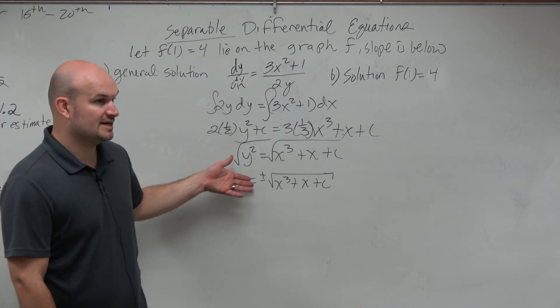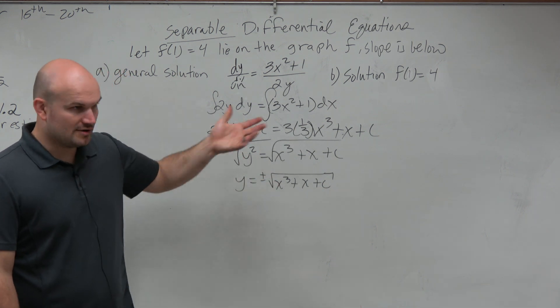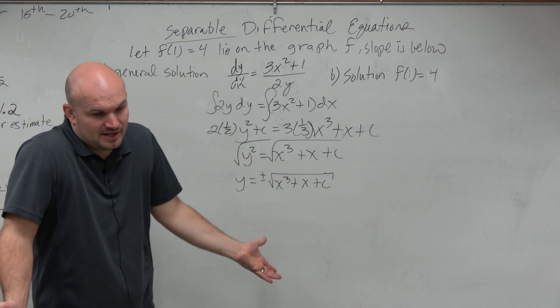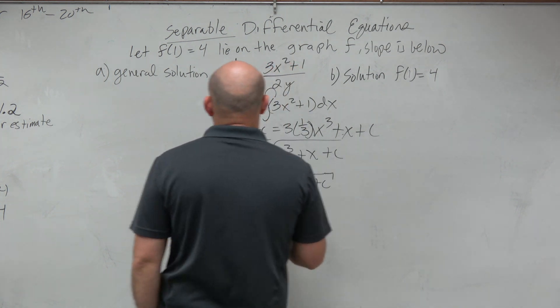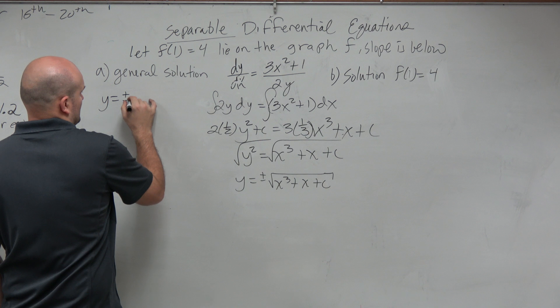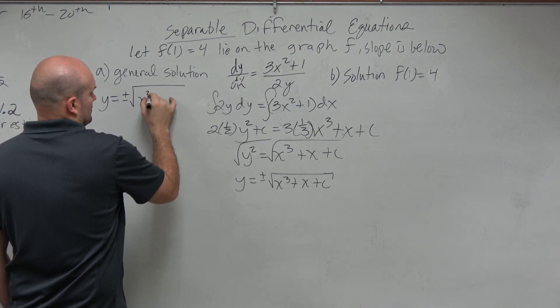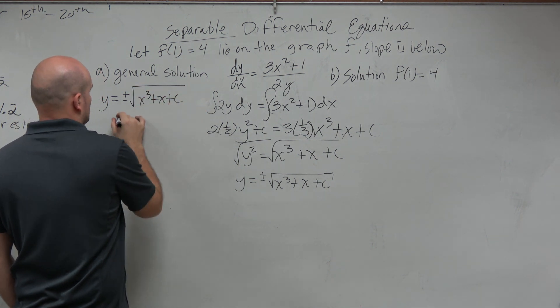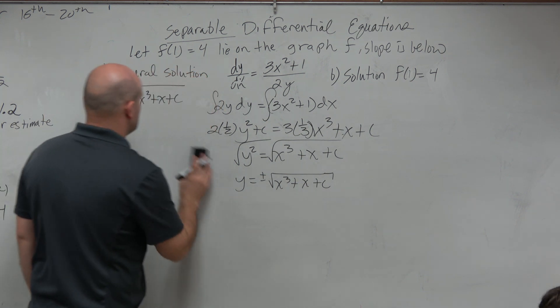But in this case, this is just a square root. So we have to undo, so we have to include the plus or minus, right? And this is going to be our general solution. Now, why do I keep on doing this? OK. So that's our general solution.